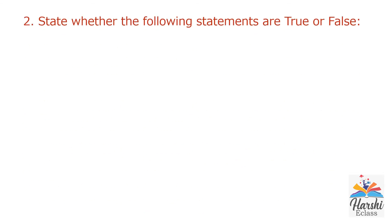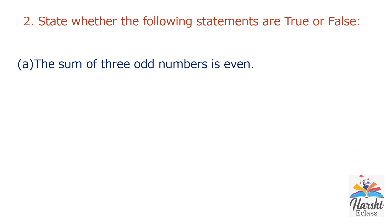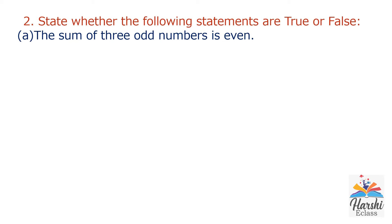Question number 2: State whether the following statements are true or false. Statement A: The sum of three odd numbers is even. Let's check by adding three odd numbers: 3 plus 5 plus 7. 3 plus 5 is 8, and 8 plus 7 is 15, which is an odd number. So this statement is false. The sum of two odd numbers is even, not three odd numbers.